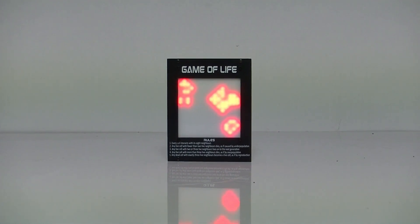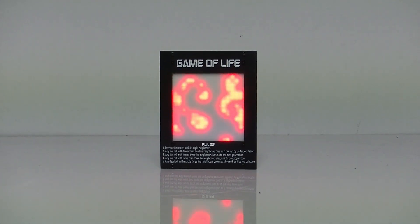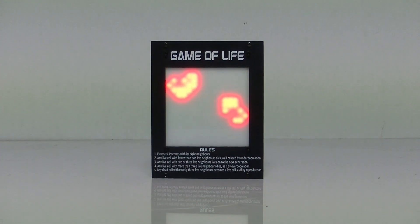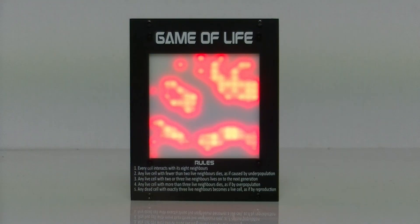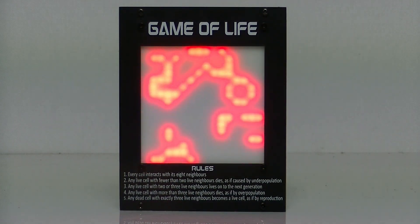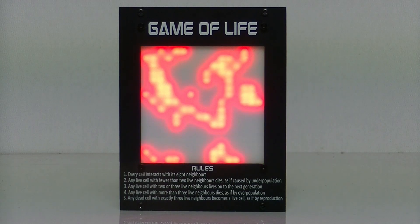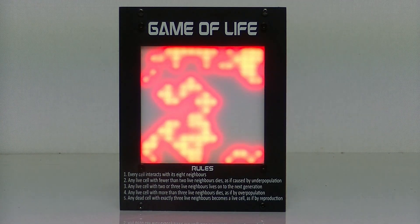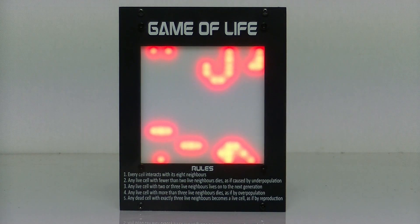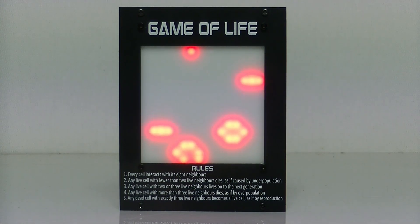Conway's Game of Life is a cellular automation zero-player game, meaning that once the game's initial state has been set, there is no further input required. The Game of Life was devised by British mathematician John Conway in 1970, motivated by previous works of luminaries such as John von Neumann. Conway wanted to explore questions in mathematical logic and self-replicating systems.